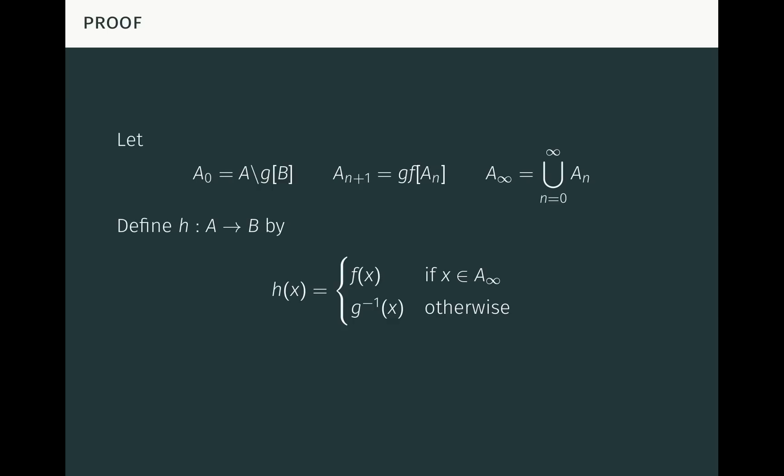Once we have those sets defined, we can define our mapping. We define H from A to B by: H of X is F of X if X is in A_infinity, and G inverse of X otherwise. In terms of the hotel, if X is in A_infinity — either a new guest or a guest that's being displaced — we find this guest a new room using F. If X is not in A_infinity, the guest is not being displaced, so we just leave them alone. Recall that G tells us the guest originally occupying a room, so G inverse gives us the room occupied by that guest, and G inverse of X just leaves that guest in their place.